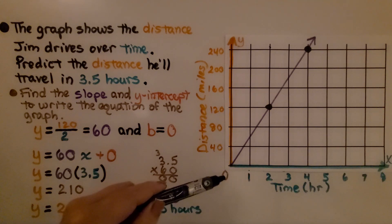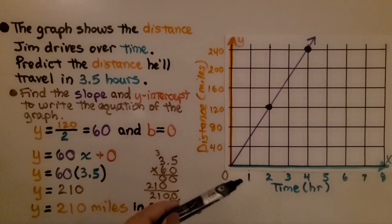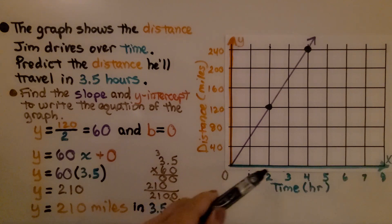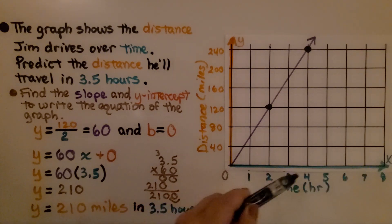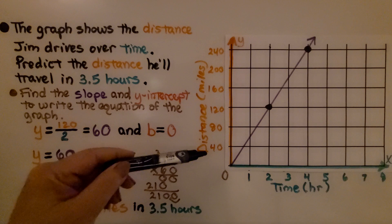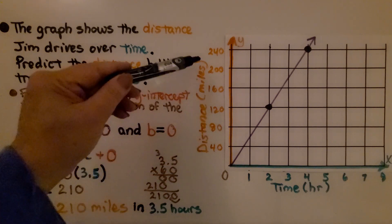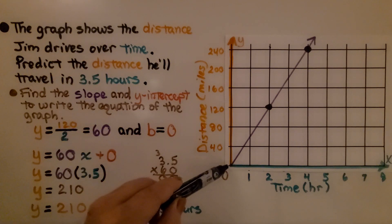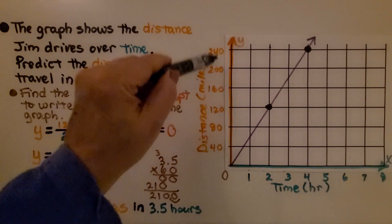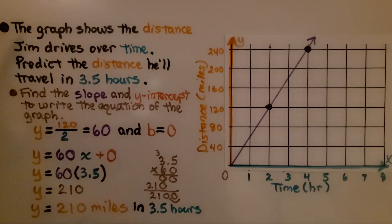We can see that x is time in hours and the scale is going by 1s: 1, 2, 3, 4, 5, 6, 7, 8. And we can see the y-axis is distance in miles and it seems to be skip counting by 40. The graph shows the distance Jim drives over time. Predict the distance he'll travel in 3.5 hours.